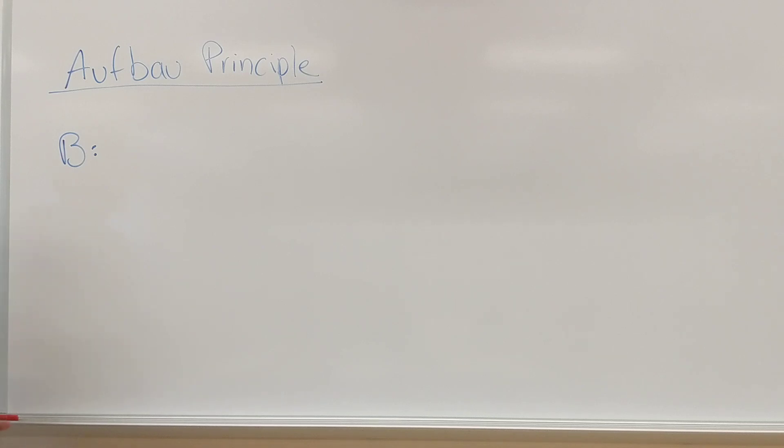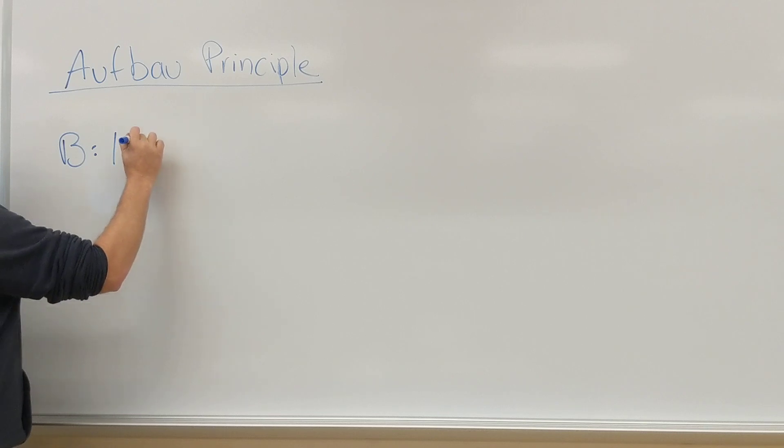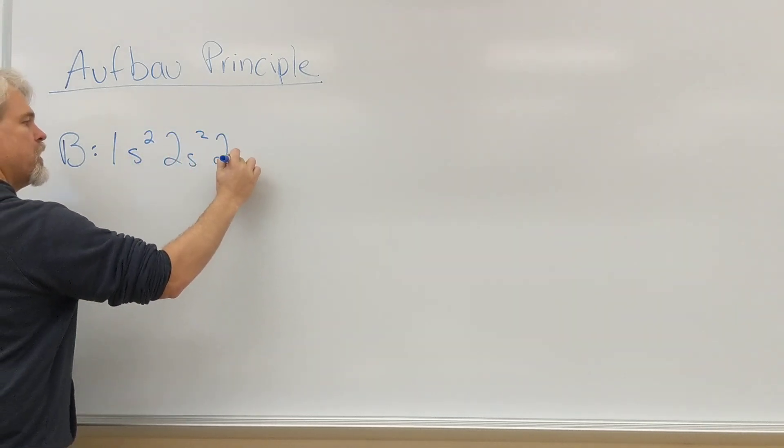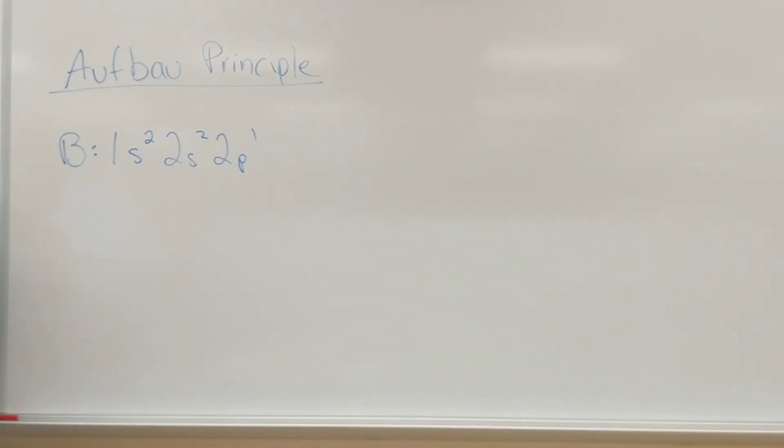Okay, coming back, you should have written down boron is 1s2, 2s2, 2p1 for the electron configuration.